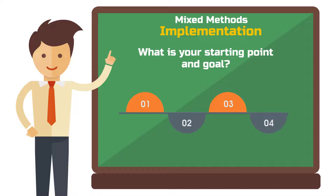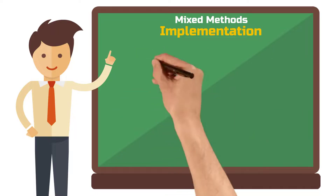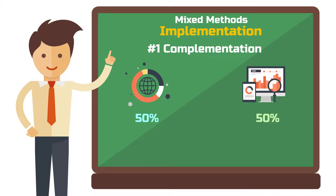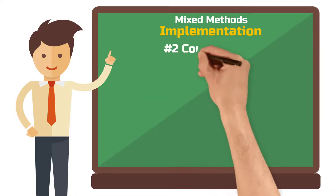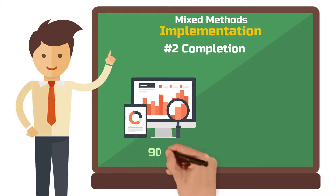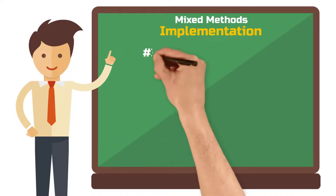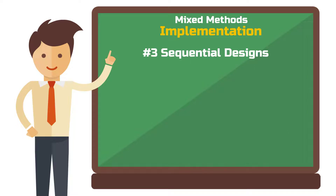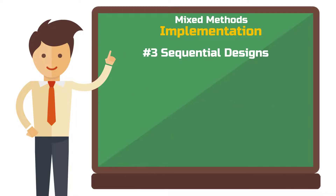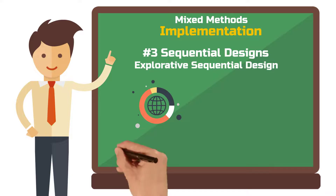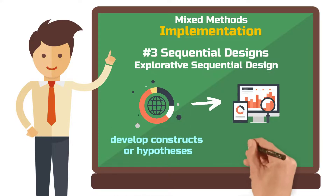Here are the four most common variants of mixed methods designs. First, complementation: qualitative and quantitative elements are equally prioritized and intended to provide complementary results on the investigated phenomenon. Second, completion: one of the methods is prioritized and subsequently supported by the other to ensure the phenomenon is fully covered. Third, sequential designs: the most common mixed methods studies follow a sequential design, meaning you complete one method first and then start with the other. The first option is the explorative sequential design, where a qualitative study is used to develop constructs or hypotheses which are then tested with a quantitative study.